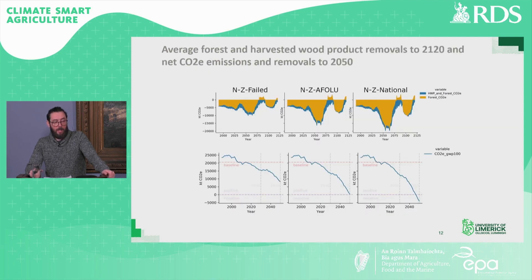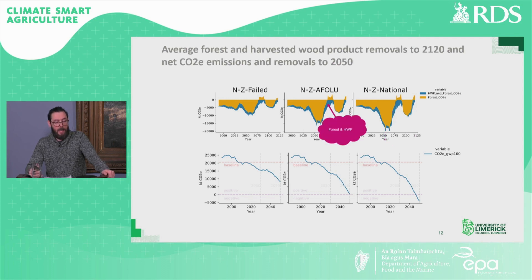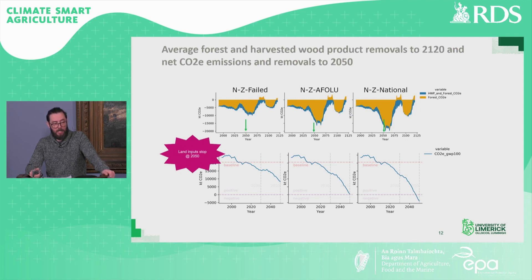Here we have the average forest and harvest wood product removals to 2120 and the aggregated CO2 emissions and removals to 2050. The orange layer represents forest only, while the blue layer represents forest and harvest wood products. We stopped the land area inputs for afforestation at 2050, and without additional afforestation area, forestry becomes a net source around 2075. However, this is mitigated somewhat by the inclusion of harvest wood products.